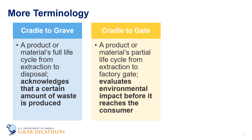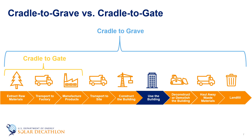Cradle to gate means a product's environmental impact before it reaches the consumer. The gate in this case refers to the factory gate — right before the product is transported to the customer or to the construction site. The term cradle to gate became more commonly used in the context of embodied carbon because most of the embodied emissions take place during this stage. Cradle to gate assessments are often the basis for environmental product declarations, or EPDs, which aim to increase transparency between manufacturers and consumers about a product's environmental impact. EPDs can be done for all types of products, including materials used in buildings, so comparing EPDs can be informative when selecting building components. On our building life cycle graphic, cradle to gate ends right before the building materials are transported to the site, while cradle to grave encompasses the entire life cycle.